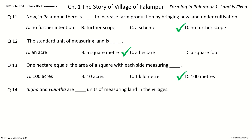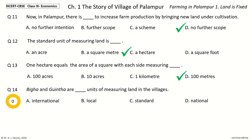Last question: Bheega and Gunta are Dash units of measuring land in the villages. The options are International, Local, Standard, National. Your time to choose. And the answer is Local. So, Bheega and Gunta are local units of measuring land in the villages.